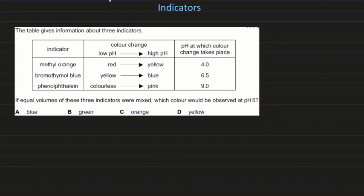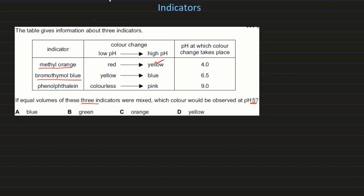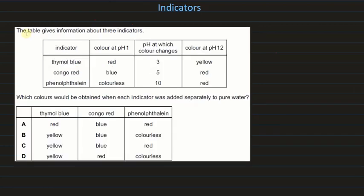The next question gives information about three indicators — methyl orange, bromothymol blue, and phenolphthalein — and the pH at which their color changes. If equal volumes of all three are mixed and placed in a solution of pH 5, what color is observed? Methyl orange is yellow at pH 5. Bromothymol blue is also yellow at pH 5 (it turns yellow to blue at pH 6.5). Phenolphthalein is colorless below pH 9. So the mixture appears yellow.